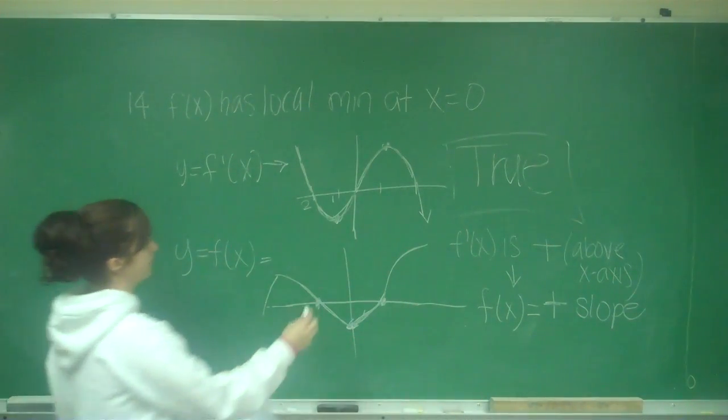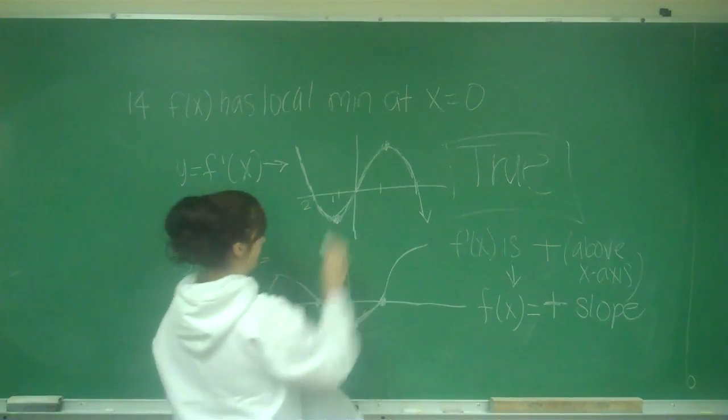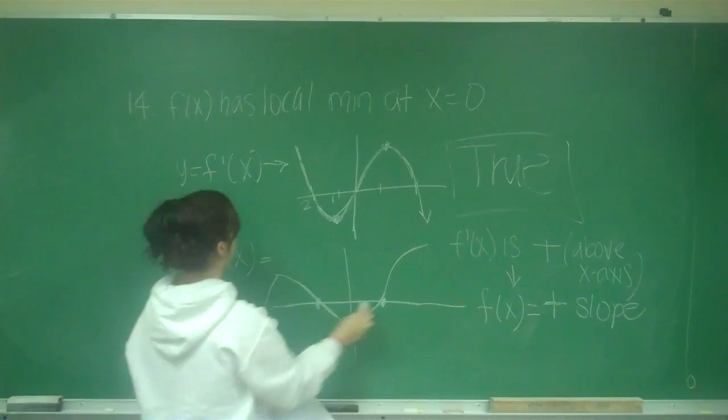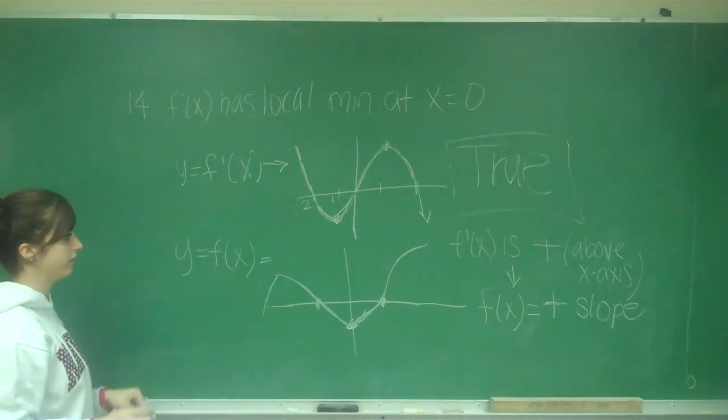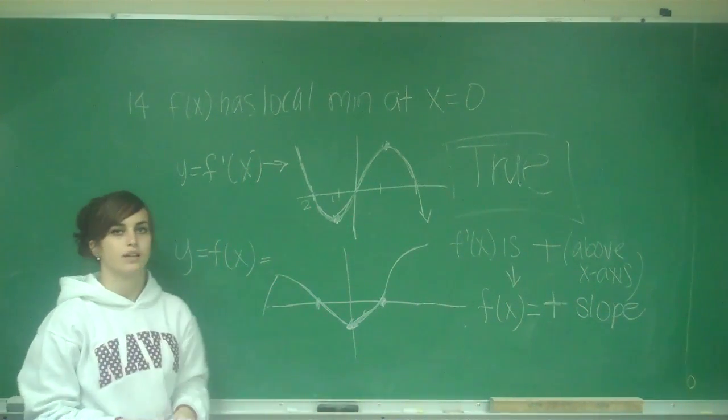Also, remember that when there's a min or a max, that means it crosses the x-axis on my position graph. So this is number 14.